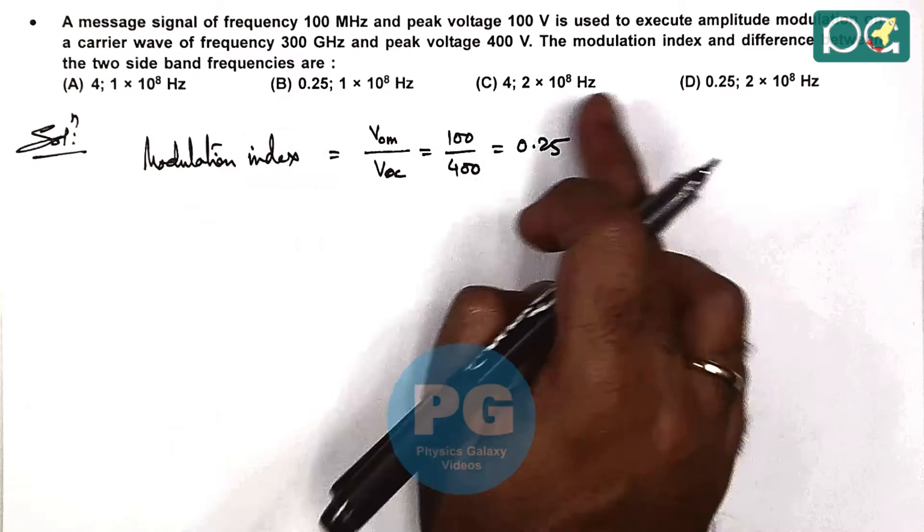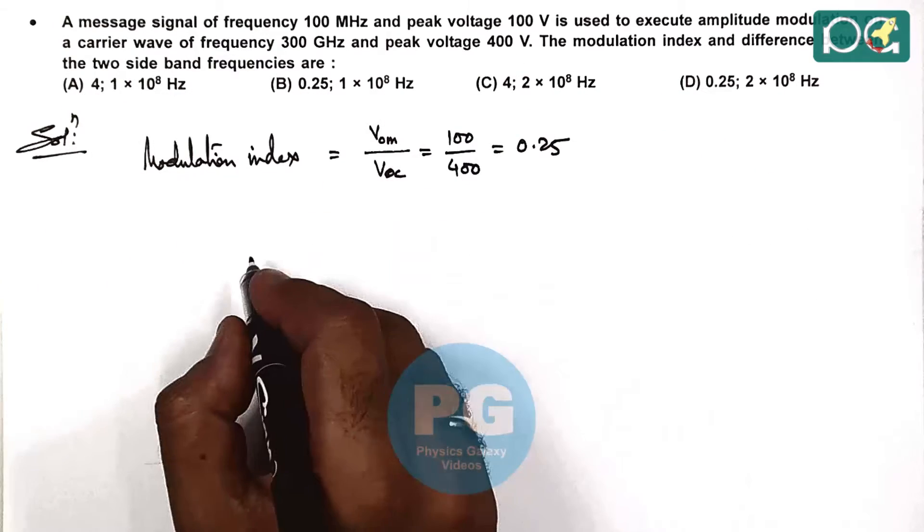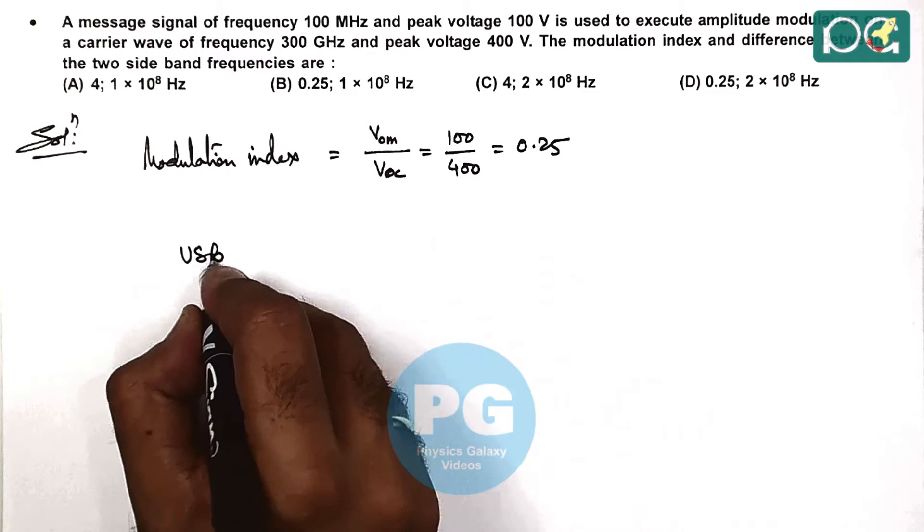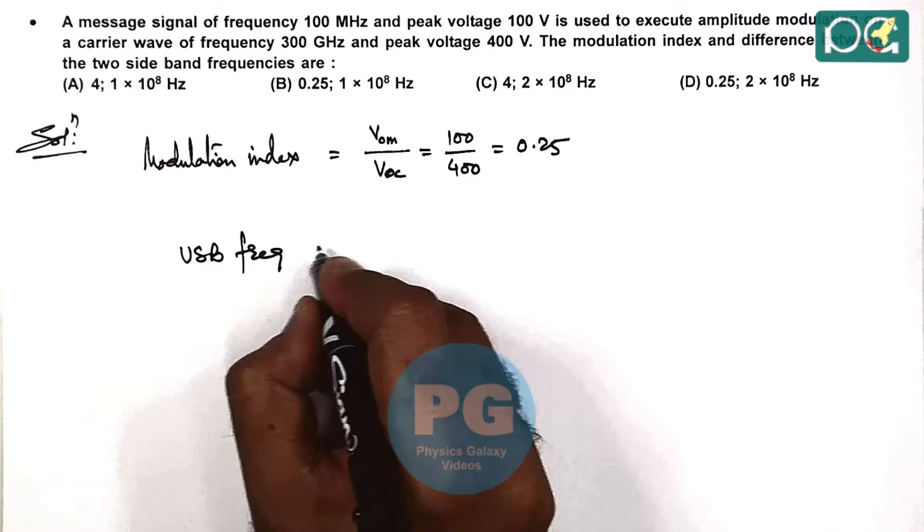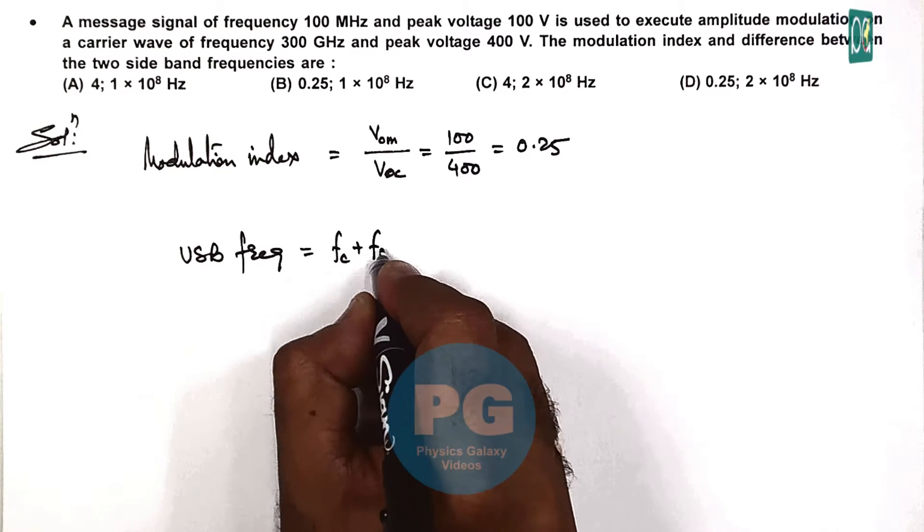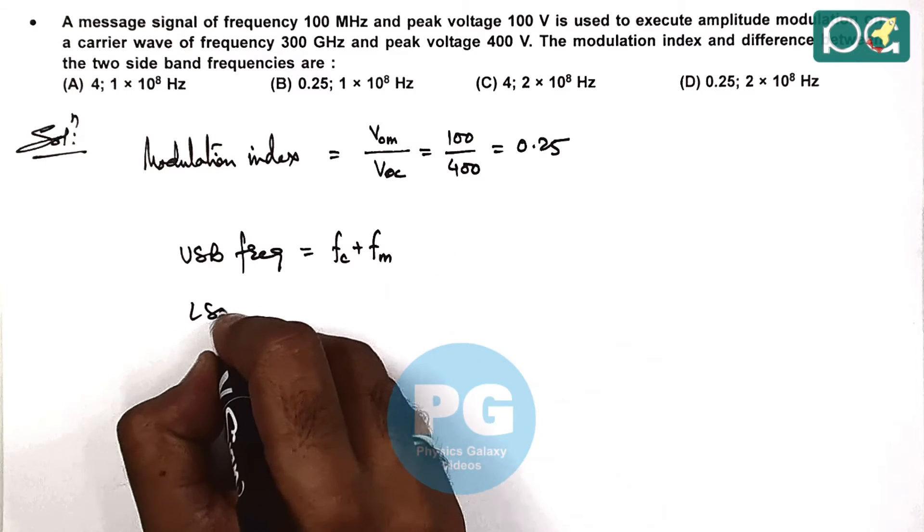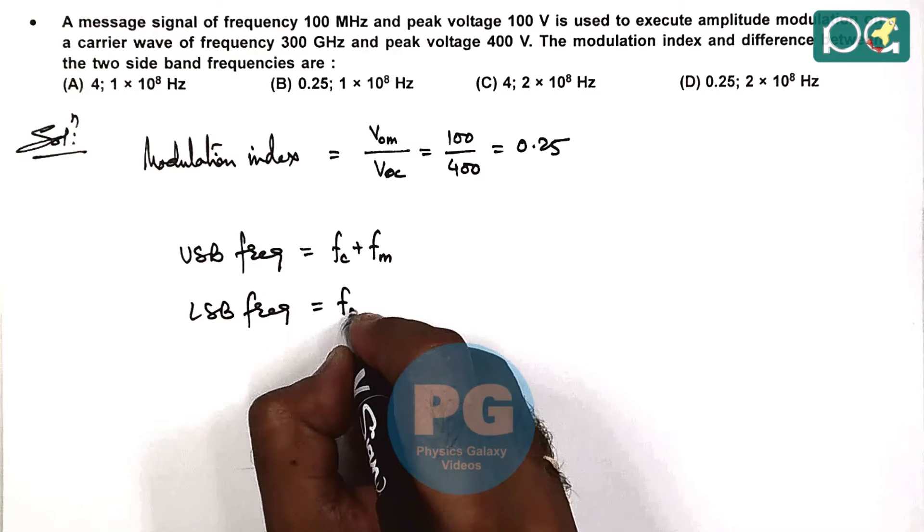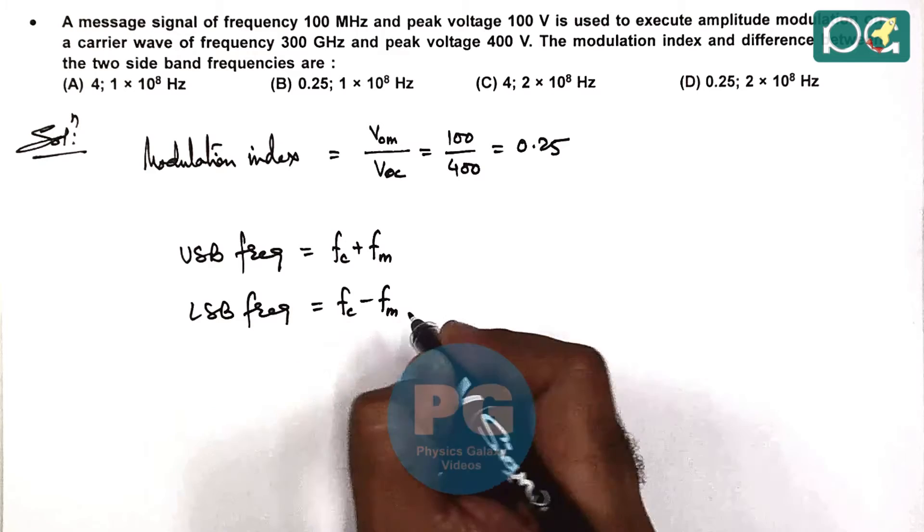And here if we calculate the upper sideband frequency, this is given as carrier wave frequency plus modulating frequency. And lower sideband frequency is carrier wave frequency minus modulating frequency.